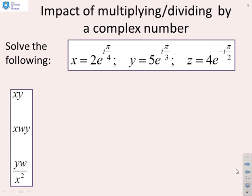Just some demonstrations of some simple multiplications. We've given you a number of complex numbers and we want to carry out some multiplies. And you'll see very, very simple. xy, I simply multiply the moduli, so I get 2 times 5, and then I do e to the i, pi by 4 plus pi by 3. So you can see multiplying complex numbers written in exponential form is very, very simple.